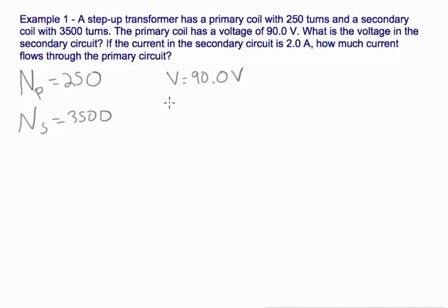The primary coil has a voltage of 90 volts. What is the voltage in the secondary circuit? We also know that the current in the secondary coil is 2 amps, and we're asked for the current in the primary coil.